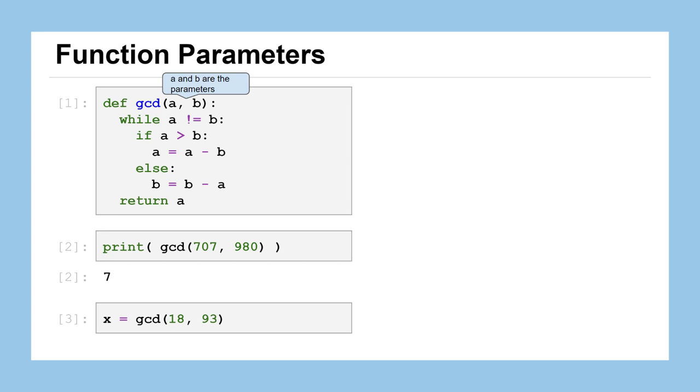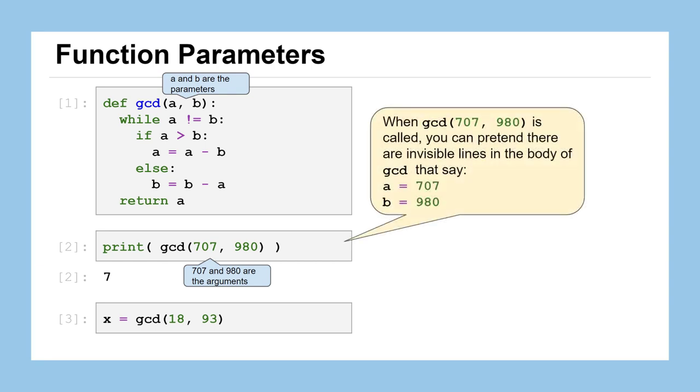So again, just some vocabulary here. A and B are what we call the parameters, the names of the input variables. And 707 and 980 are the arguments, the values of the input. And when we call our function and provide the arguments that get passed to the parameters, basically what's happening behind the scenes is that those argument values get stored to the corresponding variable names. A and B are called positional parameters or we provide positional arguments to them, meaning that since 707 was the first argument, it goes to the first parameter A. And since 980 was the second argument, it will get passed along to the second parameter B.